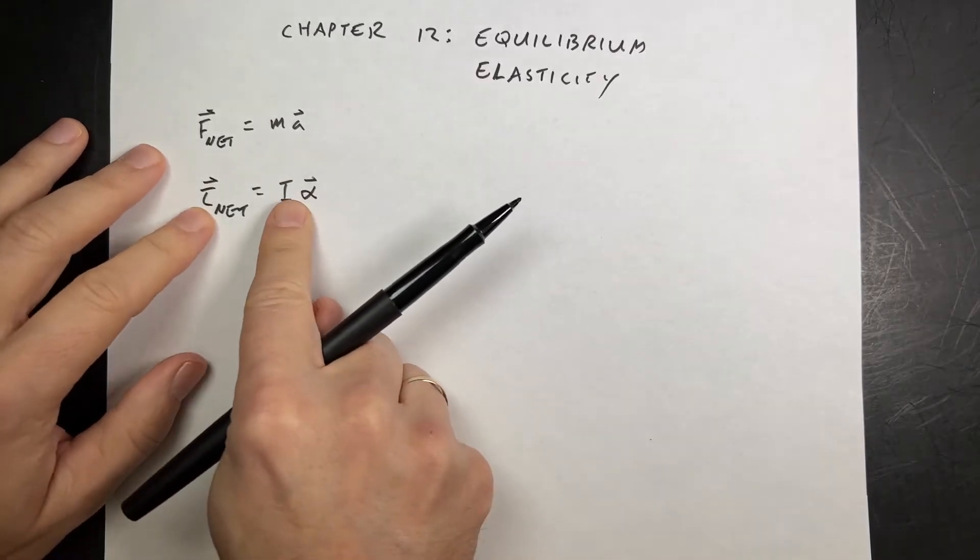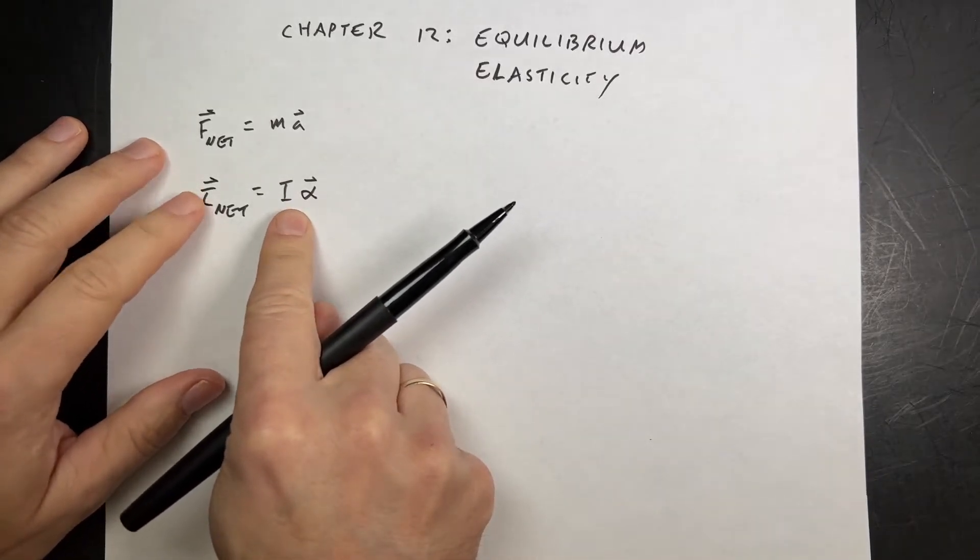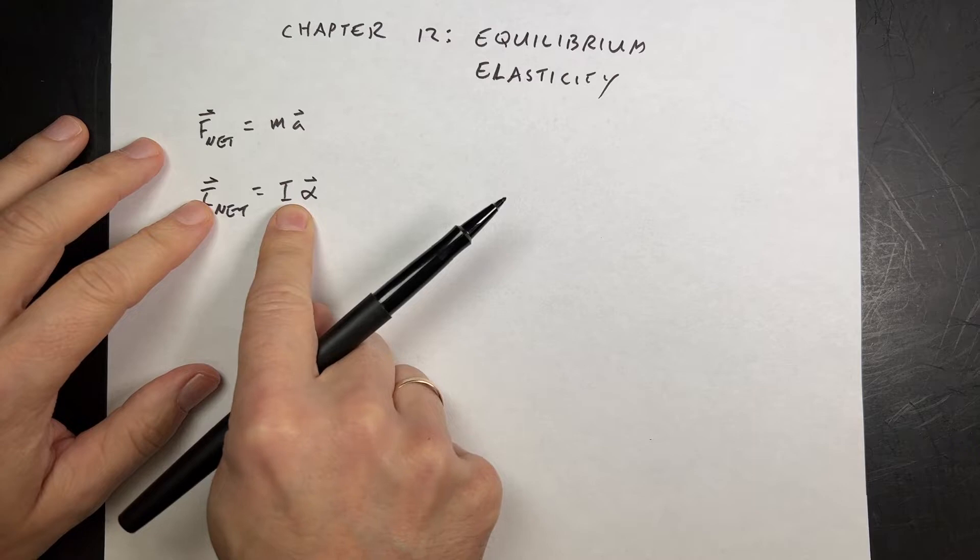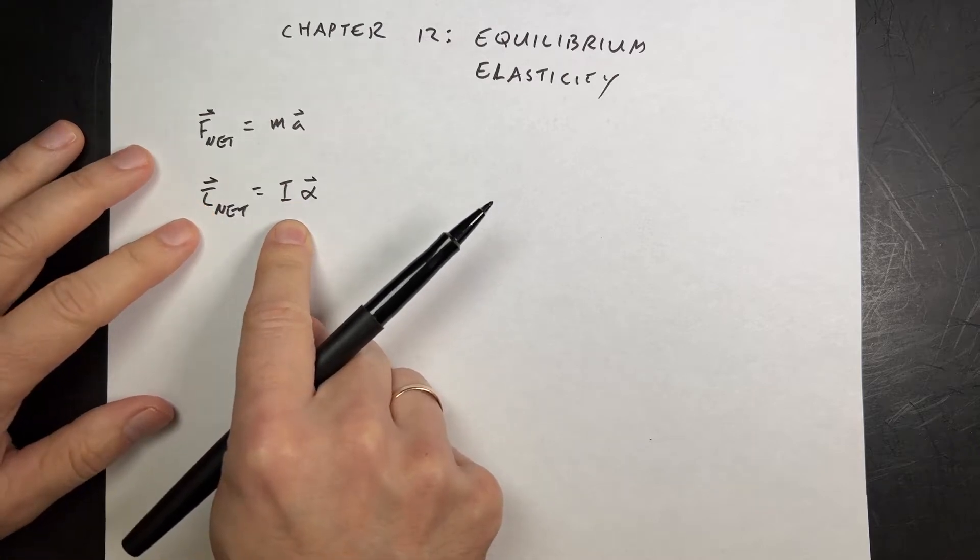Let's write this as torque net equals I alpha. And again, this is weird because this torque vector and the angular acceleration don't have to be in the same direction. This is for fixed axis rotations, so it's a little strange. But I'm going to write it that way anyway.